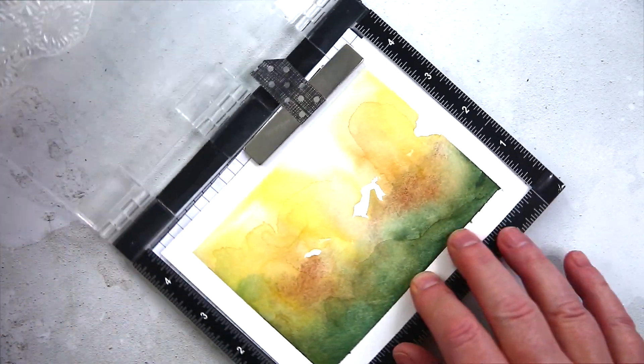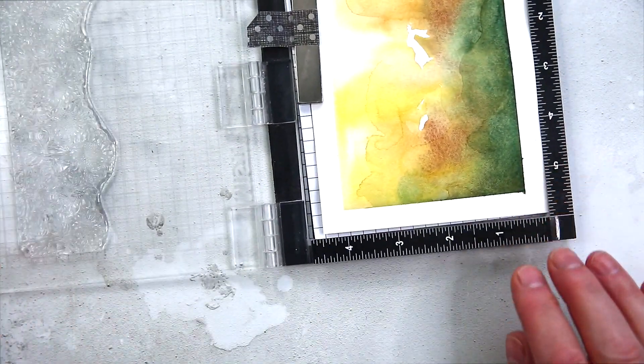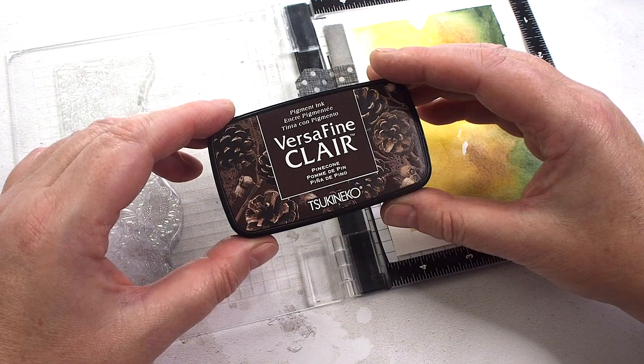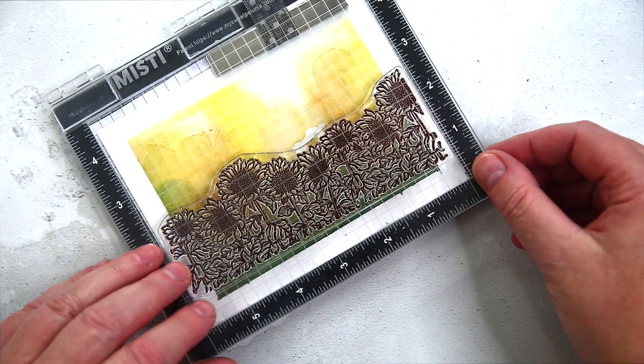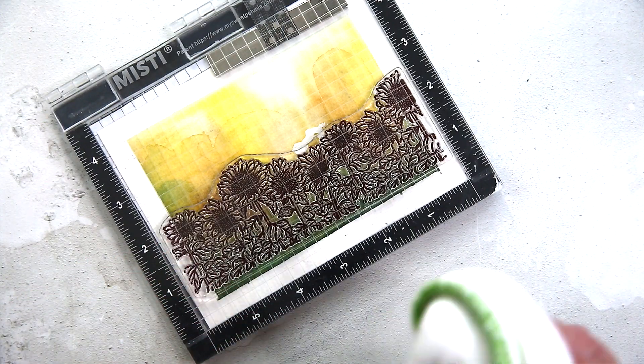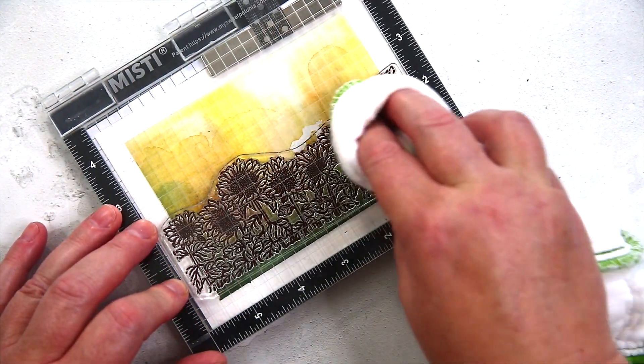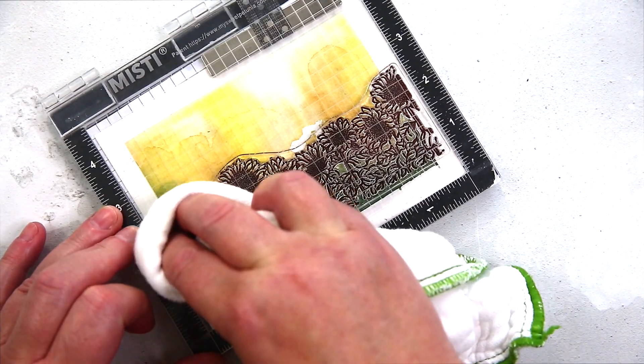I lined up the sunflower image so that the sunflower heads would sit in the yellow areas of the watercolor background. I then stamped them in VersaFine Clair Pinecone ink. I felt that dark brown was just a tad softer in color than my usual black and would fit in with the season and color scheme.